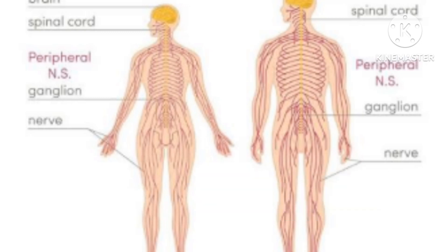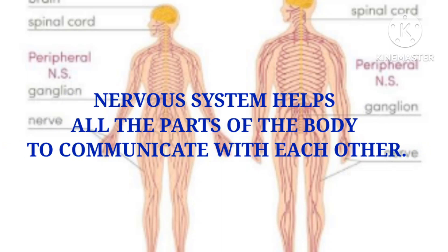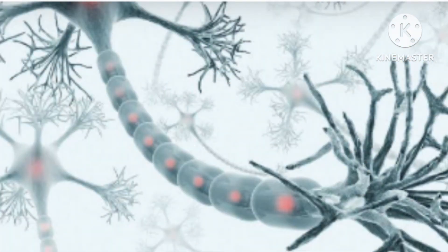Now, what is the function of the nervous system? The nervous system helps all the parts of the body to communicate with each other. It also reacts to changes both outside and inside of the body. Neurons are cells within the nervous system that transmit information to other nerve cells, muscles, or gland cells. Most neurons have a cell body, an axon, and dendrites.